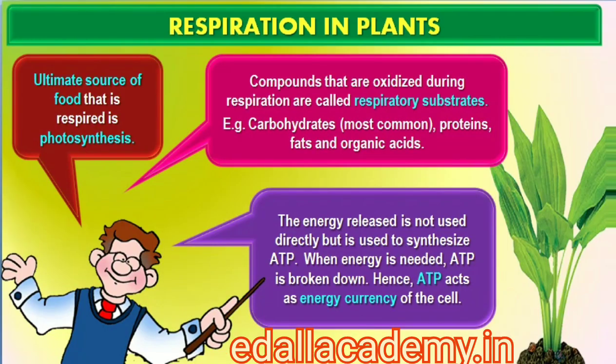The compounds that are oxidized during this process are known as respiratory substrates. Usually carbohydrates are oxidized to release energy, but proteins, fats and even organic acids can be used as respiratory substances in some plants under certain conditions. During oxidation within a cell, all the energy contained in respiratory substrates is not released free into the cell or in a single step. It is released in a series of slow stepwise reactions controlled by enzymes, and it is trapped as chemical energy in the form of ATP.